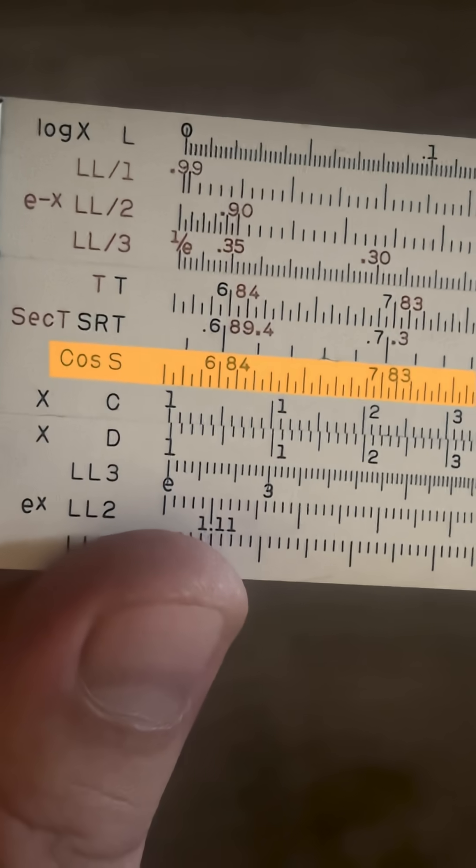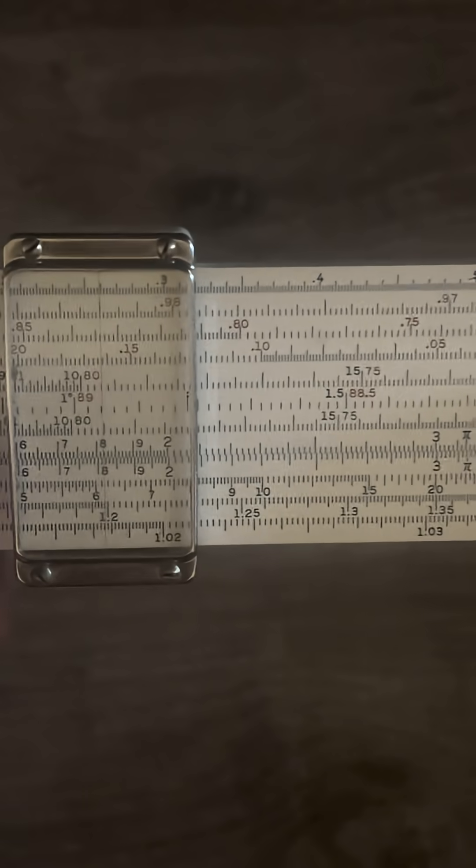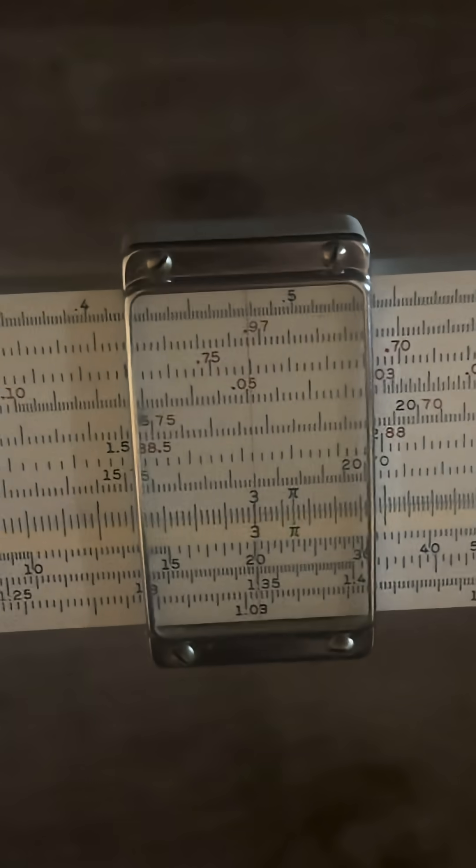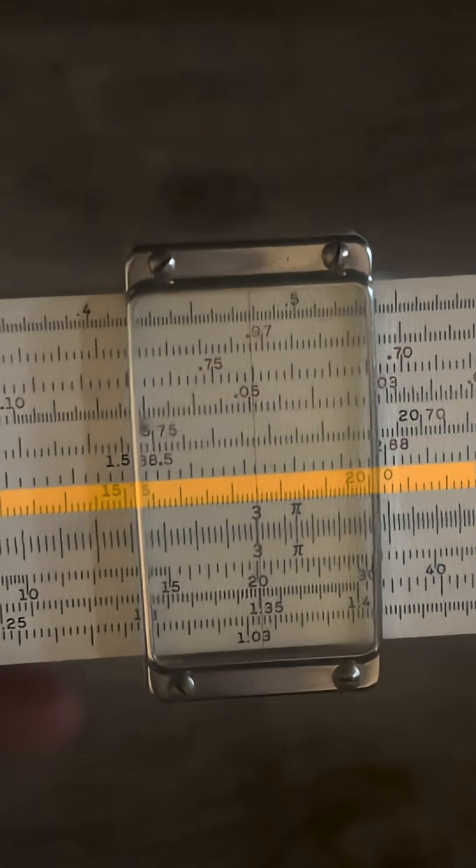Just an overview: the S scale goes from 5.7 up to 90 on the right side. As you've seen in previous videos, we always get a product on the C and D scales. So wherever that product is, let's say it's on three, you can look up on the S scale and it'll give you the sine degrees.